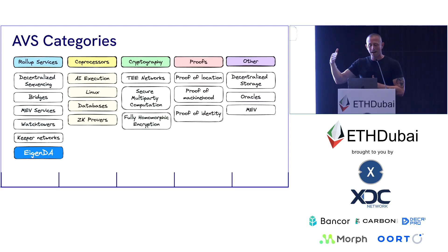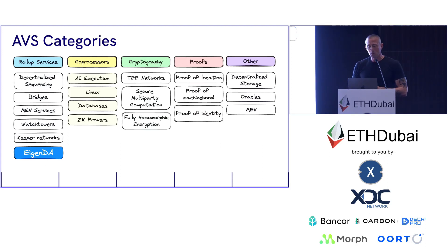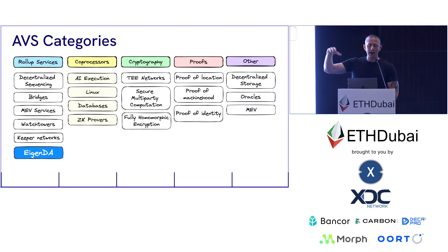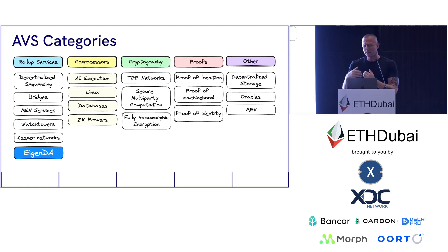We have the data availability layer, which is EigenDA — the first AVS. Then we have other categories like coprocessors, different forms of cryptography, proofs, and other. Under 'other' we have decentralized storage, decentralized databases, and a lot of people doing AI-related work.